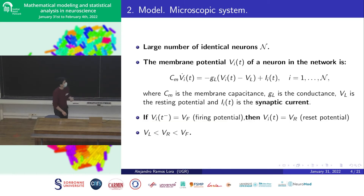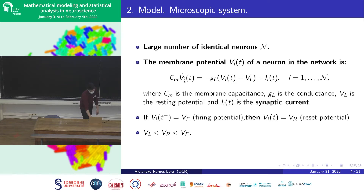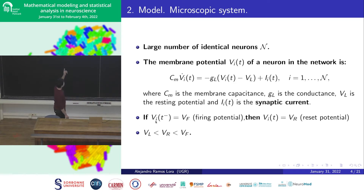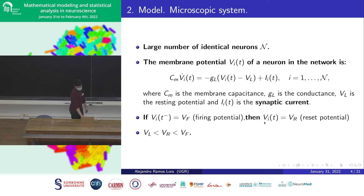We consider a large number of neurons. The equation describing the evolution of the voltage has the time derivative of the voltage, the terms regarding the drift towards VL — the resting potential — and the term for the input current due to the synapses. The condition is: if a neuron reaches the firing voltage, it is instantaneously reset to the reset potential Vr, which must satisfy the inequality of being between the resting potential and the firing potential.